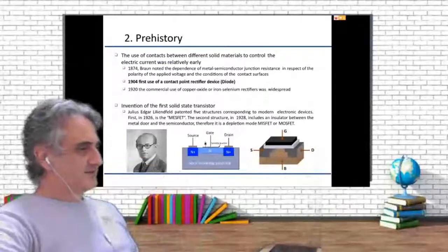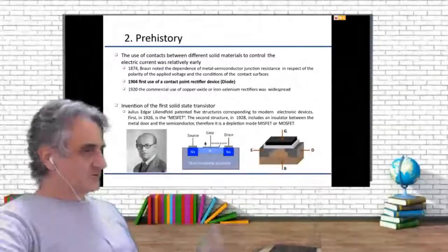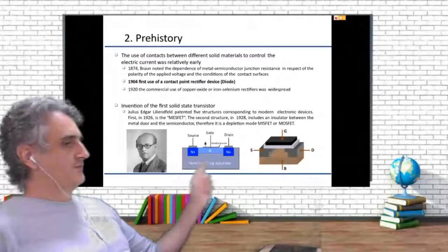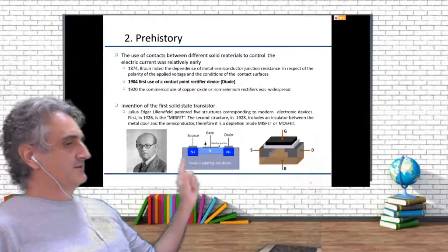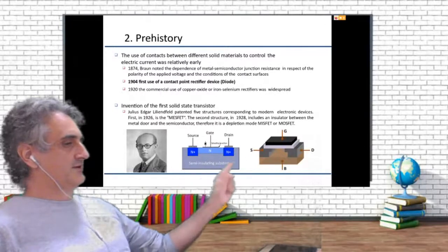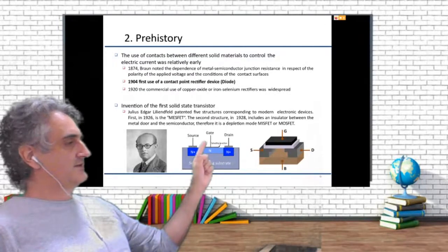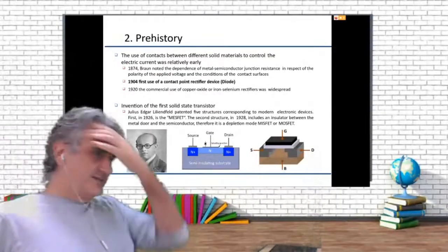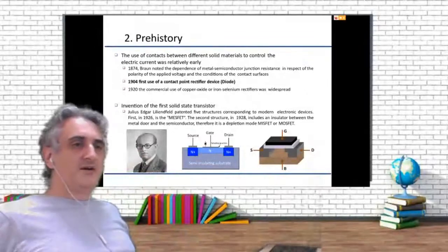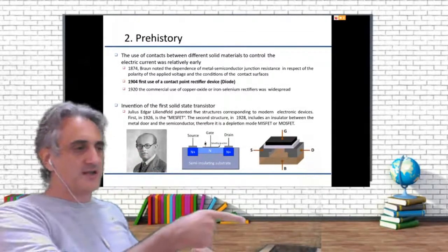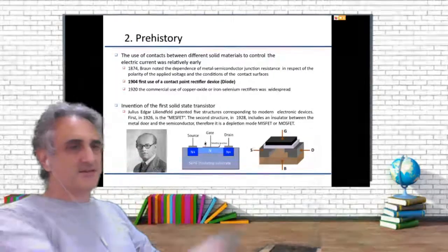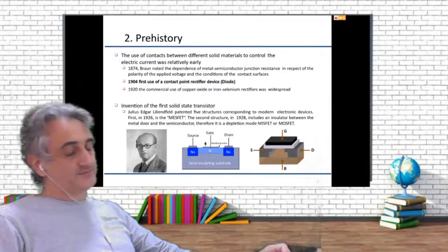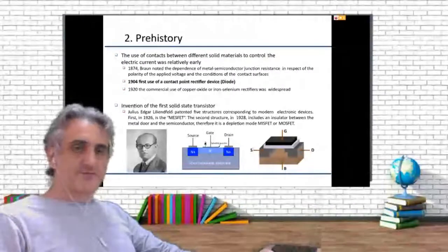The first thing he patented was a structure with a source and a drain — similar to a resistor — and a gate with a Schottky junction, which is some kind of diode. This is very similar to a bipolar transistor. You put a current into the base and you get an amplification of the current between the drain and the source.